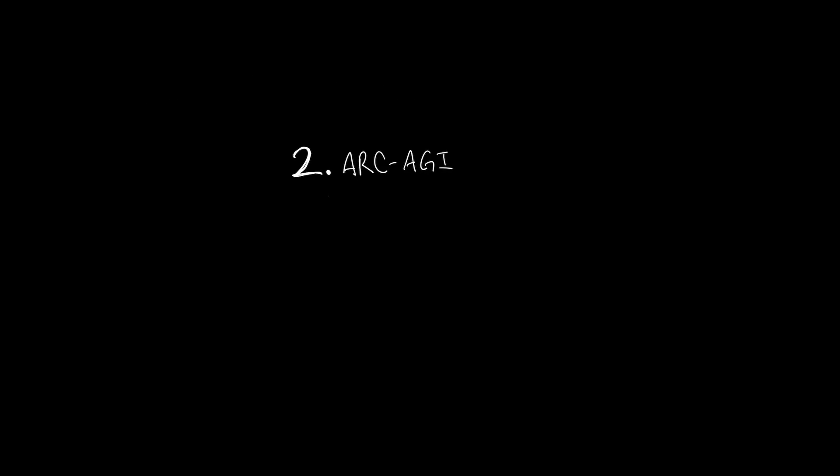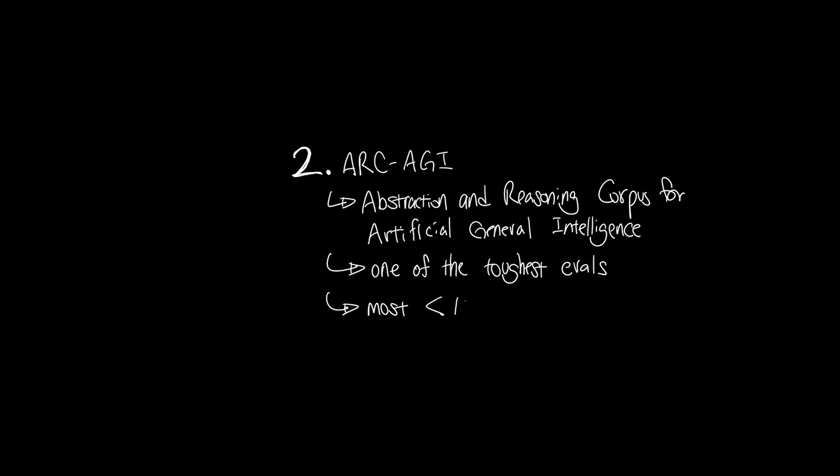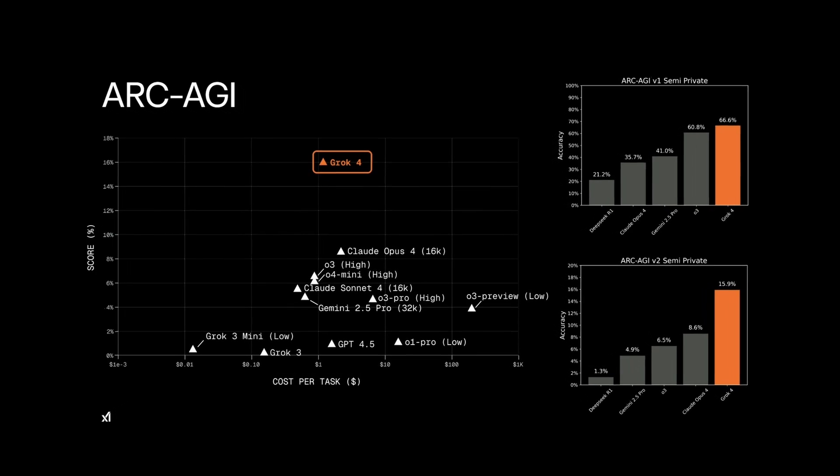Another worthwhile test to mention is the ARK-AGI, or Abstraction and Reasoning Corpus for Artificial General Intelligence. ARK-AGI is recognized as the hardest benchmark that is out there, where most models tend to be below 10% in score. Grok 4 scored 16% on ARK-AGI version 2, which is nearly double the current state of the art models like Claude 4 Opus.